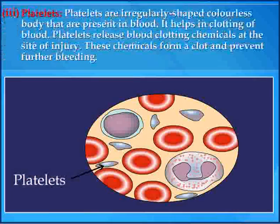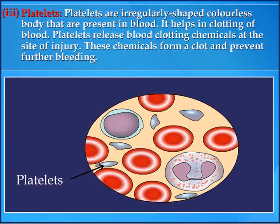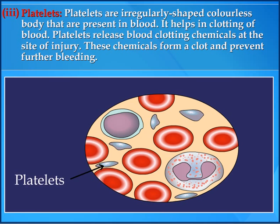3. Platelets. Platelets are irregularly shaped, colorless bodies that are present in blood. They help in clotting of blood. Platelets release blood-clotting chemicals at the site of injury. These chemicals form a clot and prevent further bleeding.